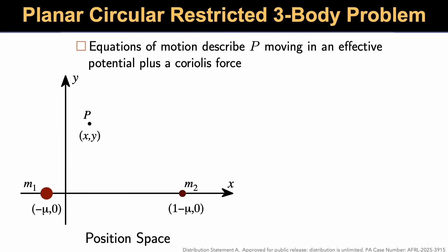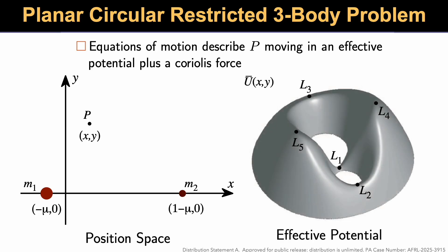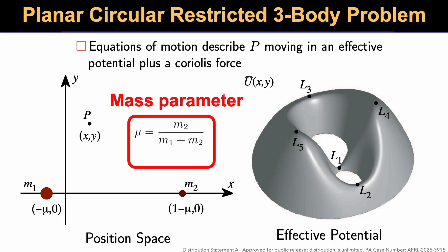We start with the simplest model that captures the essential Earth-Moon gravitational dynamics, and that's the planar circular restricted three-body problem. This involves a particle P, or spacecraft, moving in the gravity field of two massive bodies, M1 and M2, plus there's a Coriolis force because we view things in a rotating frame. The main parameter here is called the mass parameter μ = m2/(m1 + m2), and we use the mass parameter of the Earth-Moon system, which is roughly 1 over 100.